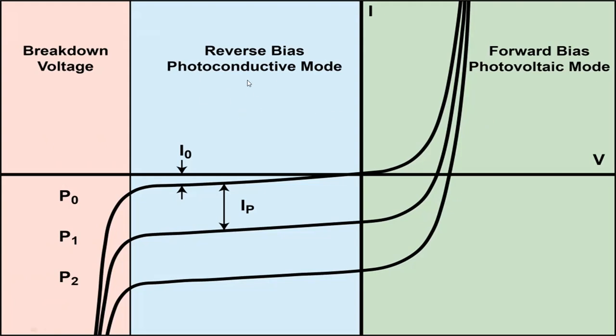In photoconductive mode, the diode is reverse biased, with the cathode driven positive with respect to the anode. This reduces the response time because the additional reverse bias increases the width of the depletion layer, which decreases the junction's capacitance and increases the region with an electric field that will cause electrons to be quickly collected. The reverse bias also creates a dark current without much change to the photocurrent.